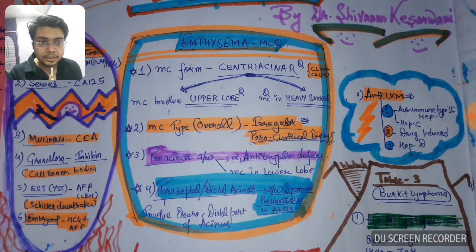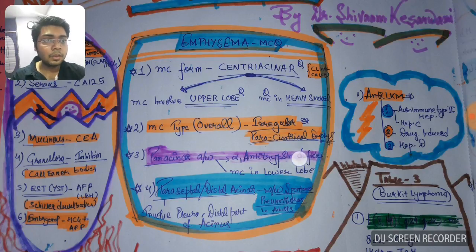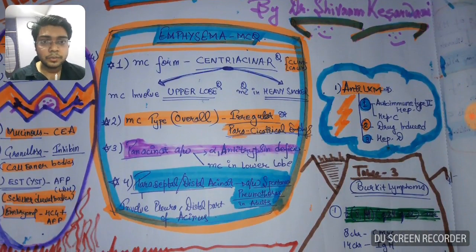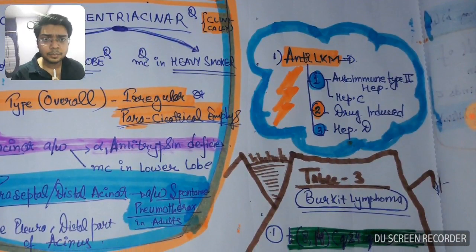The emphysema is over by this. You have known some important points from emphysema and this will suffice for NEET PG. One another table which is very frequently asked is anti-LKM antibodies.